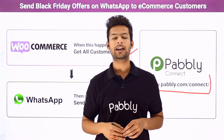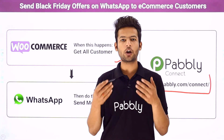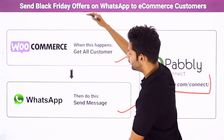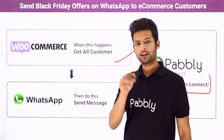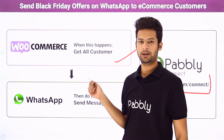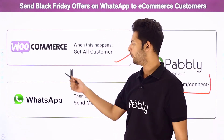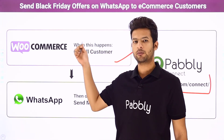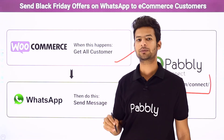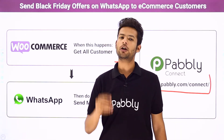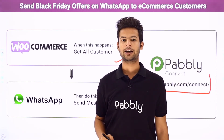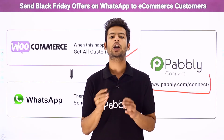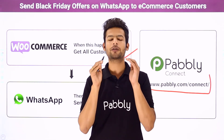Pabbly Connect is an integration and automation software. It will help us link both applications together so that every time the scheduler runs over the customer database in WooCommerce, it automatically sends a personalized WhatsApp message for the Black Friday offer to every customer. To use Pabbly Connect, you need no technical background — a non-technical person can use this software very easily.